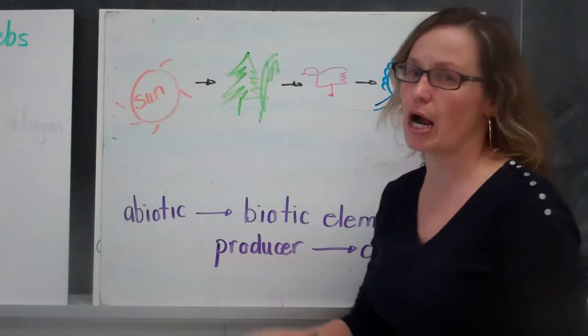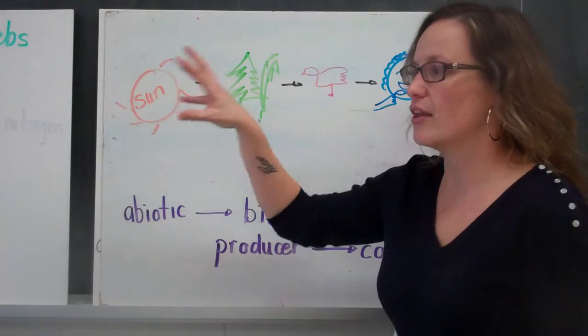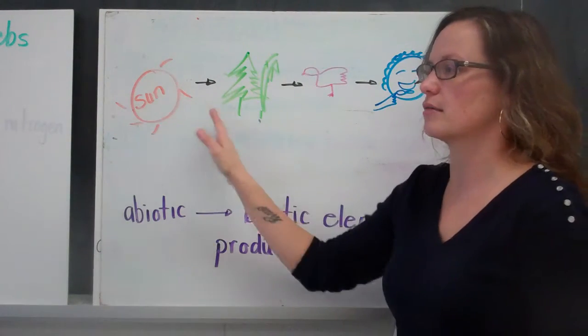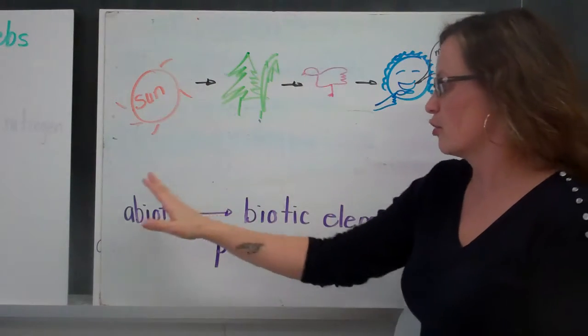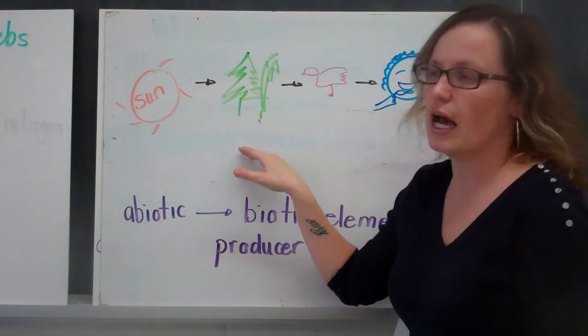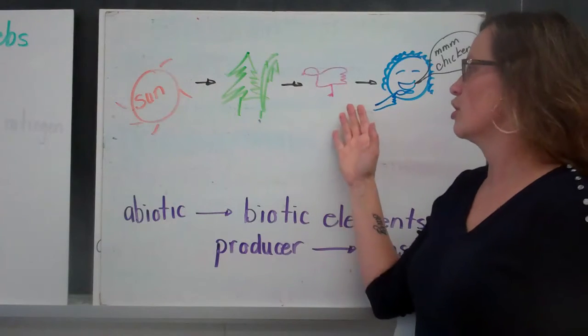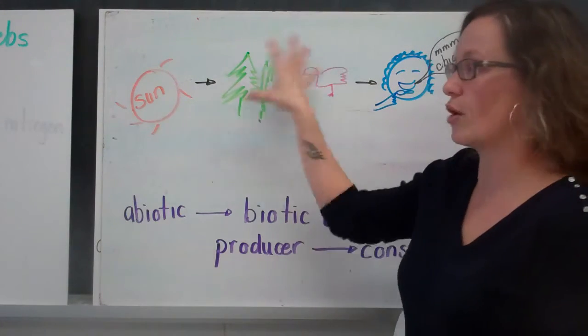They start with abiotic elements, primarily the Sun, and then those abiotic elements lead to biotic elements. So first we would have our producer, and then we would have our consumers. So those things that consume or eat our producer.